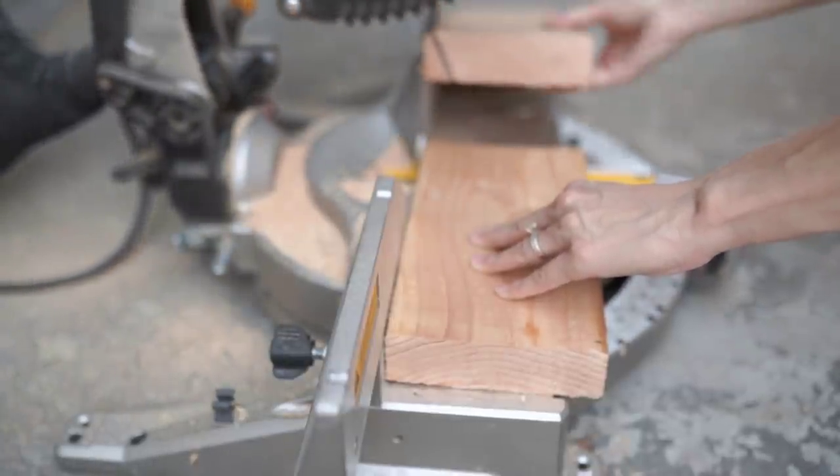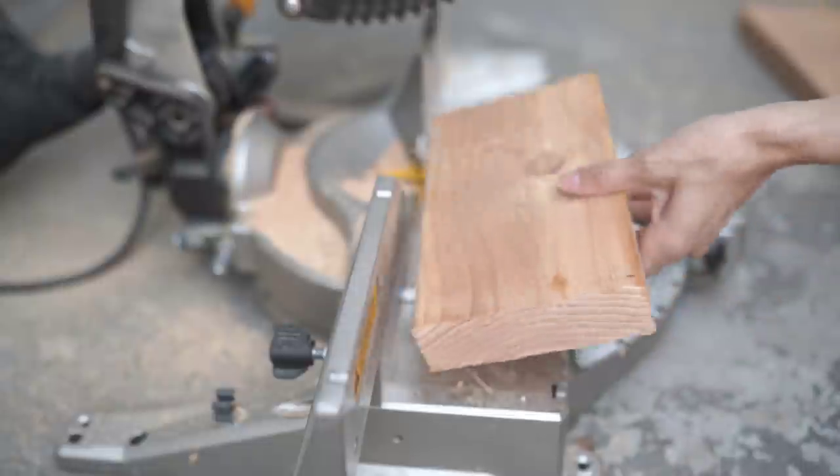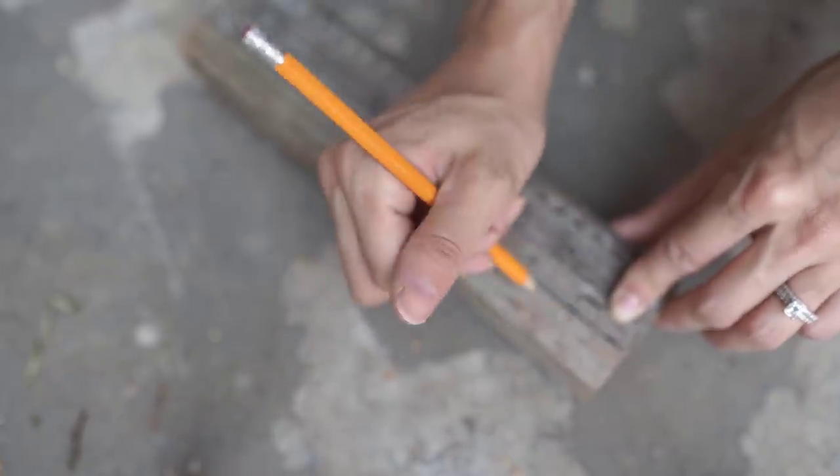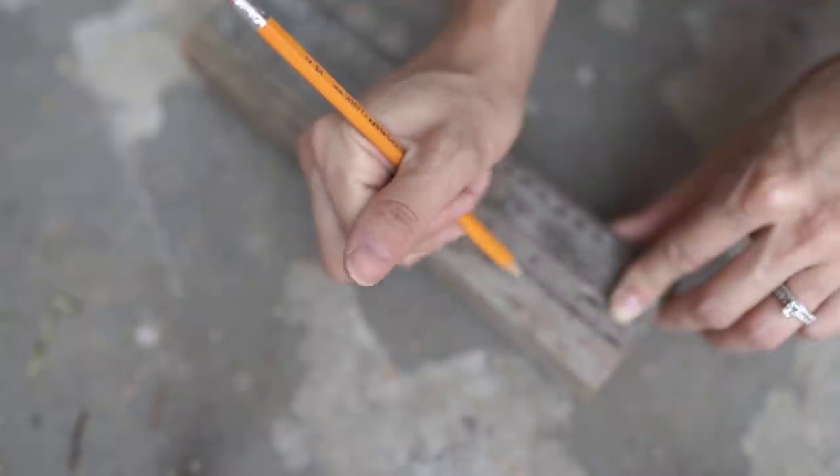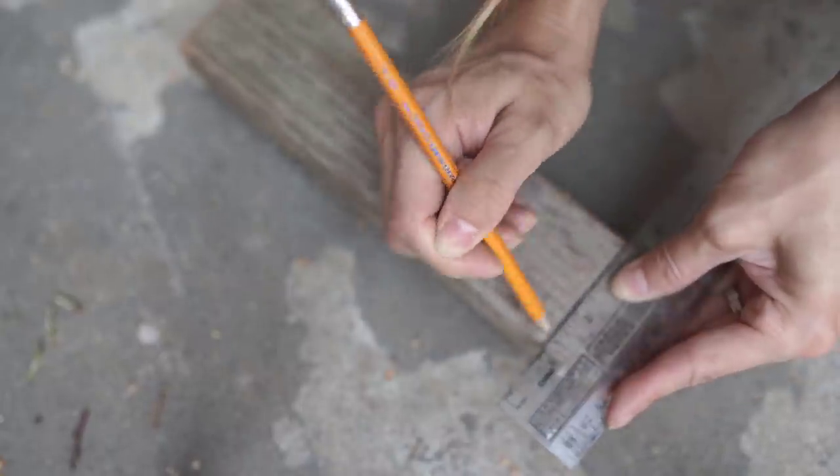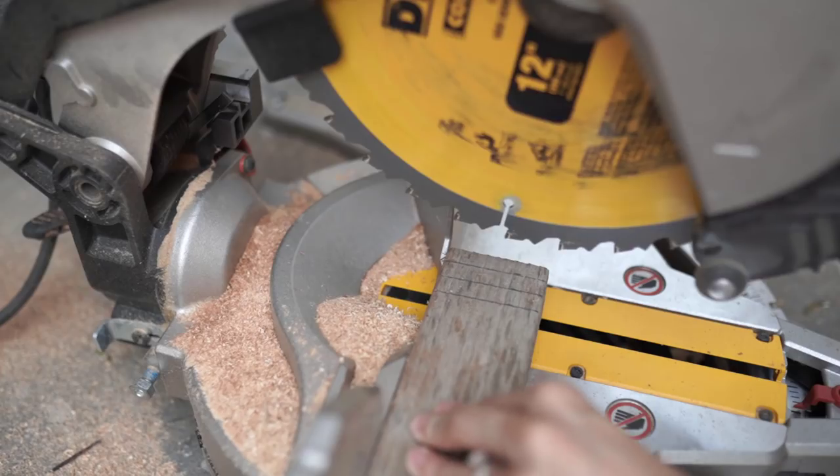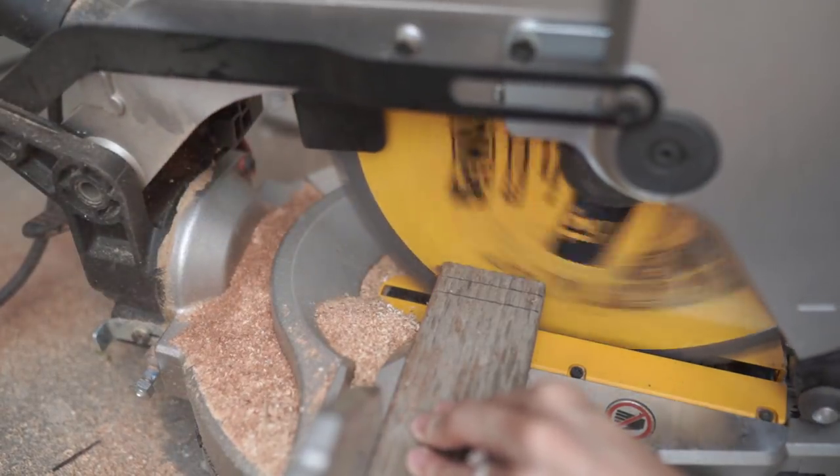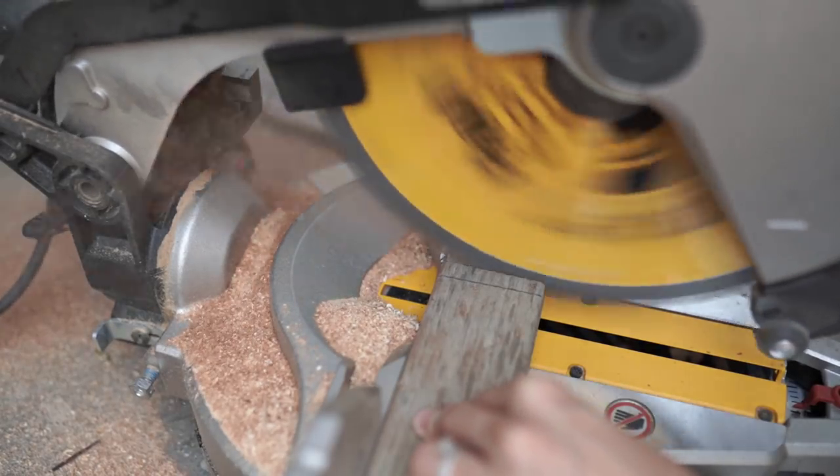I ended up switching my 2x4 into more of a really weathered piece that I had. I liked this piece a lot more so I'm just going to mark, I think I marked them at about a quarter inch spacing and then I just drew a line down so that I can cut four little feet for the bottom.